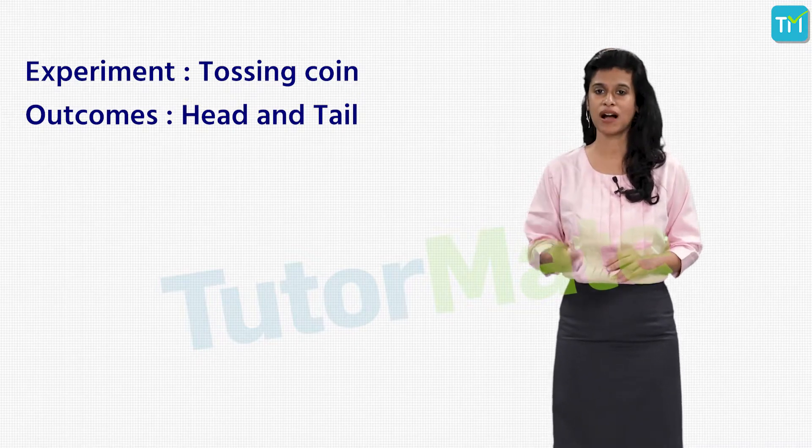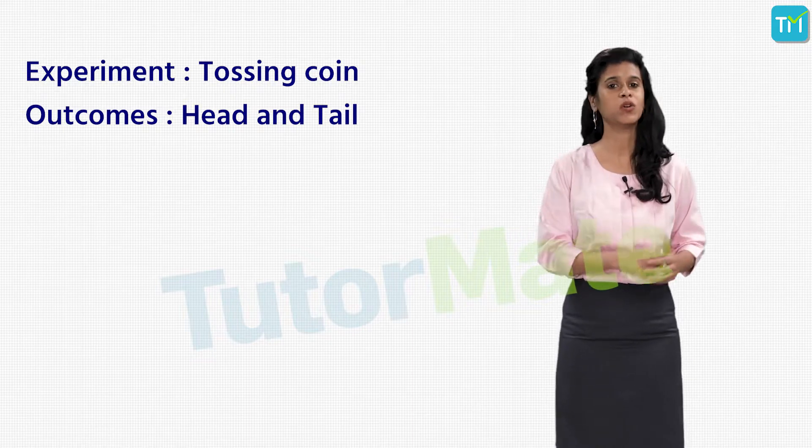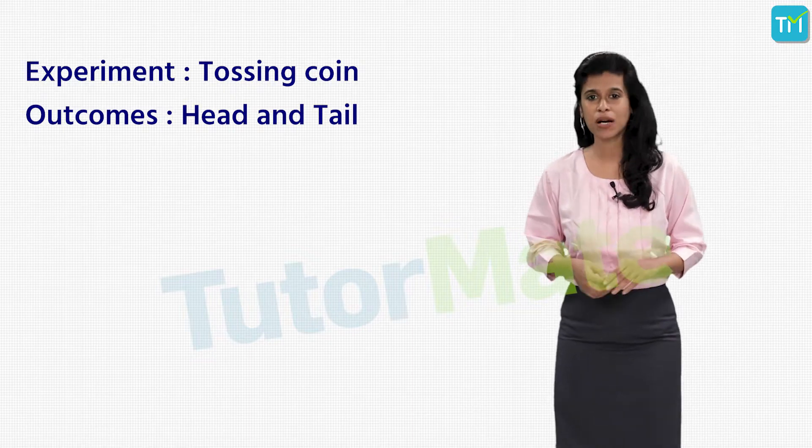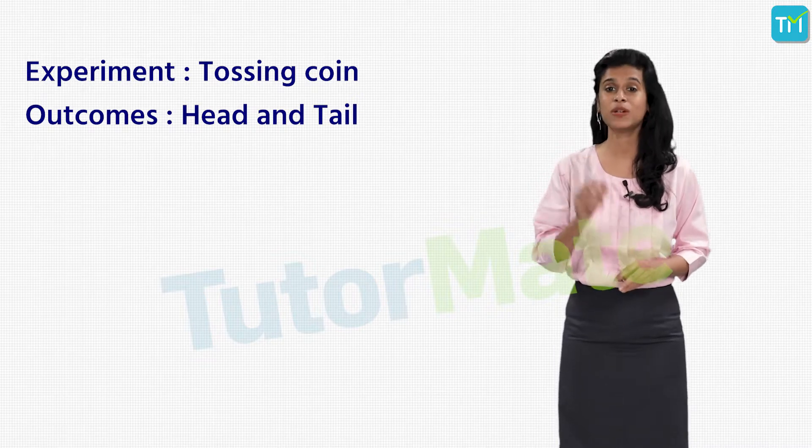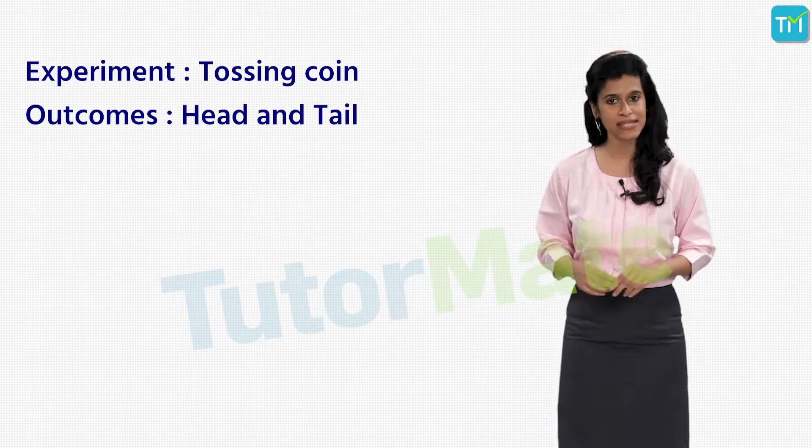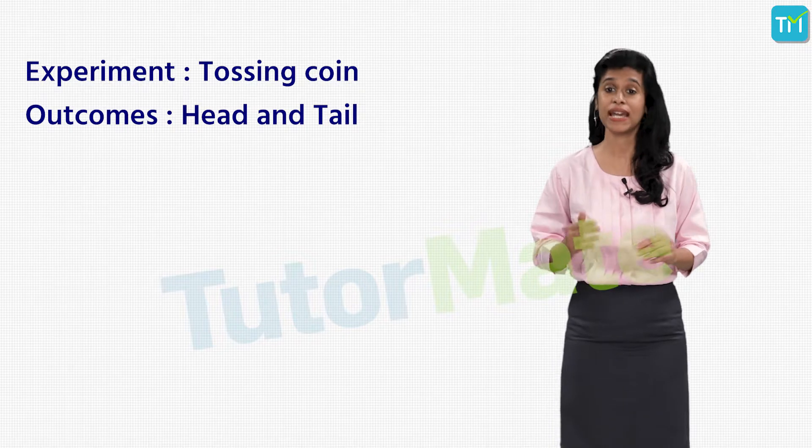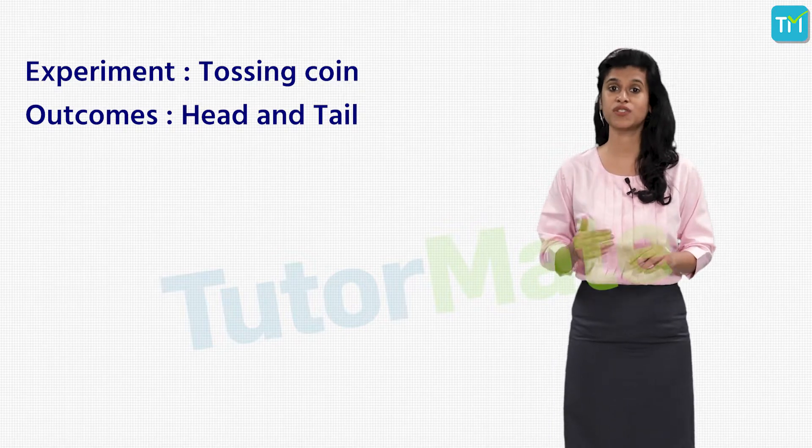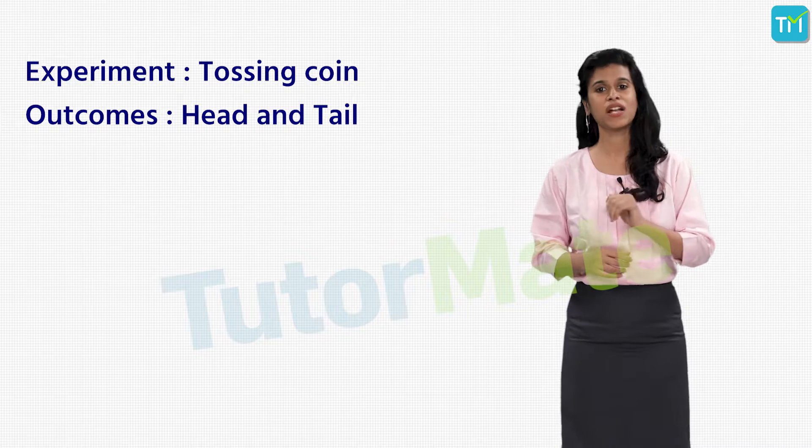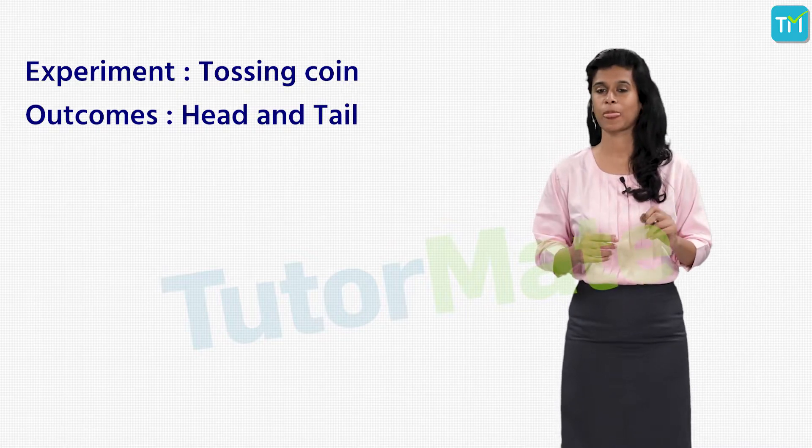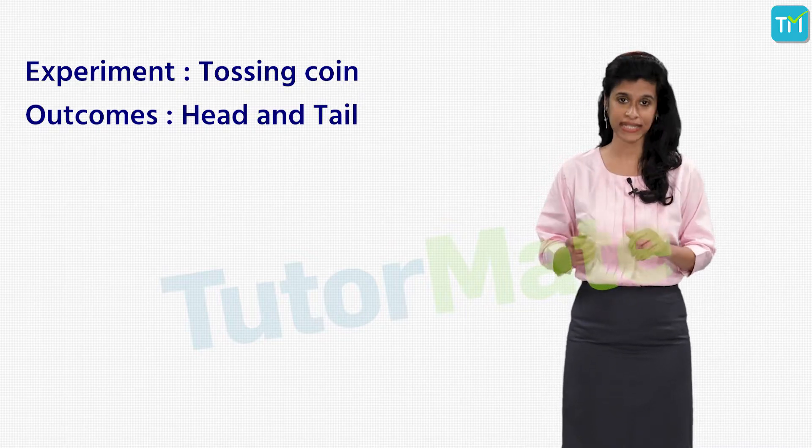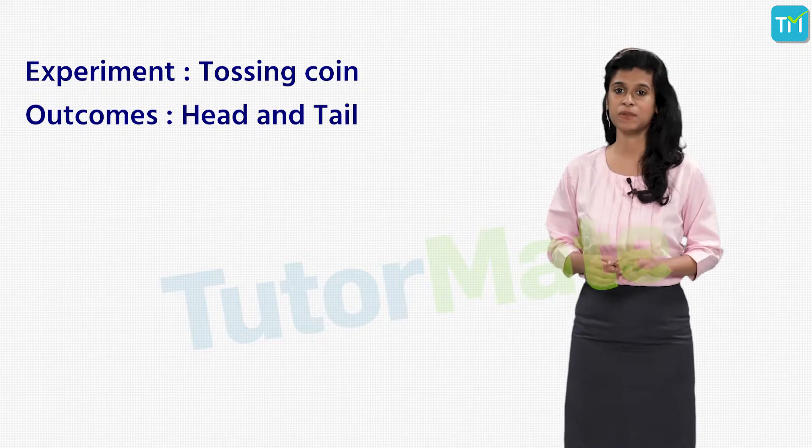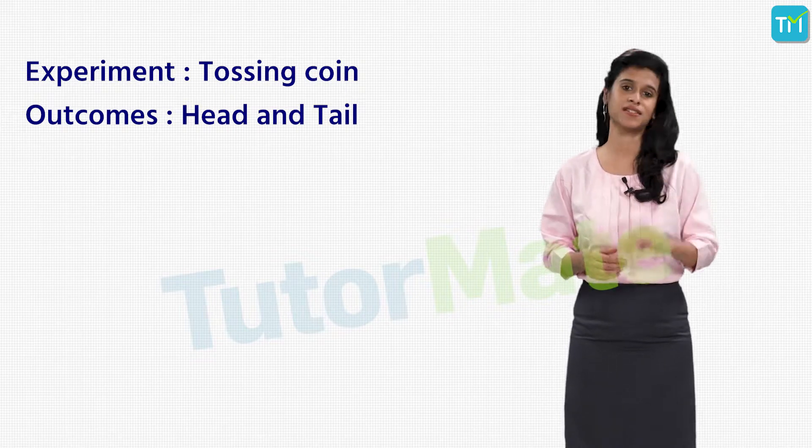In a nutshell, we say that when the experiment is tossing a coin, the two outcomes are heads or tails. Also, the possible outcomes of this experiment are equally likely. This means that the chances of getting a head are the same as the chances of getting a tail, and since we are not sure whether we will get a head or a tail, we say that the experiment results in an uncertain outcome.